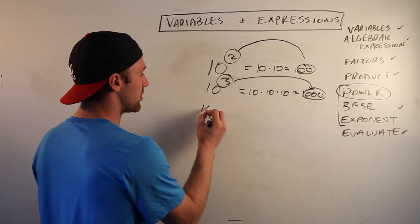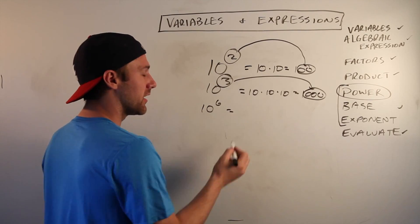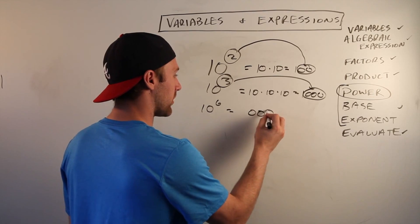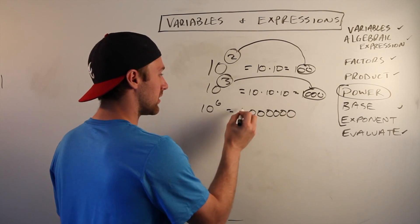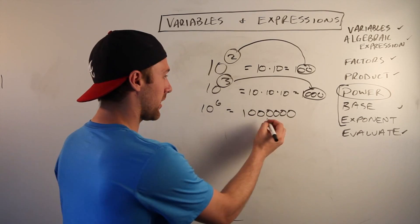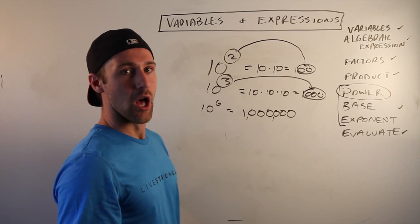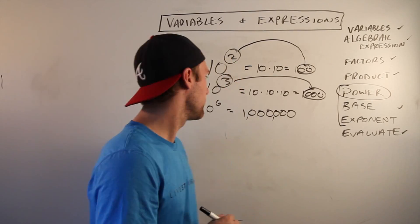Okay, so let's say we've got 10 to the sixth power. Guess how many zeros we're gonna have? One, two, three, four, five, six, and a one. They like commas in there, so we know that's a million. All right.